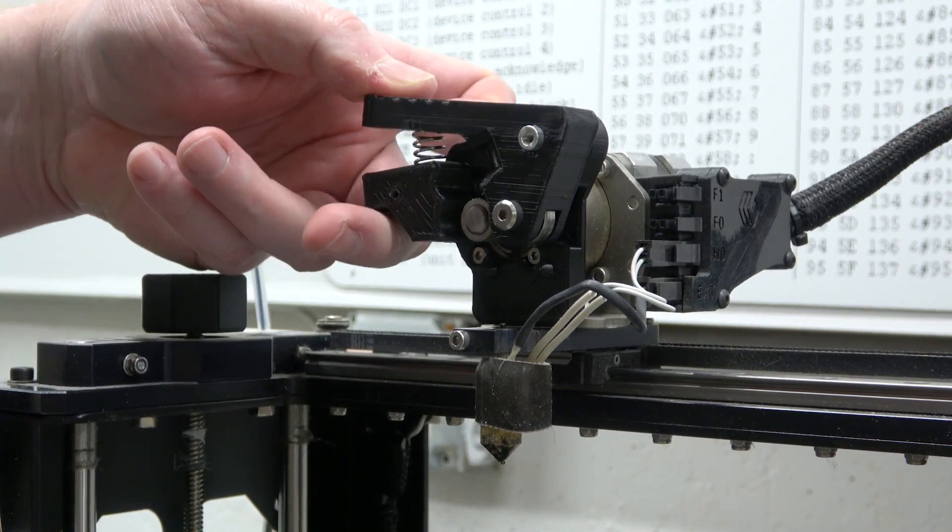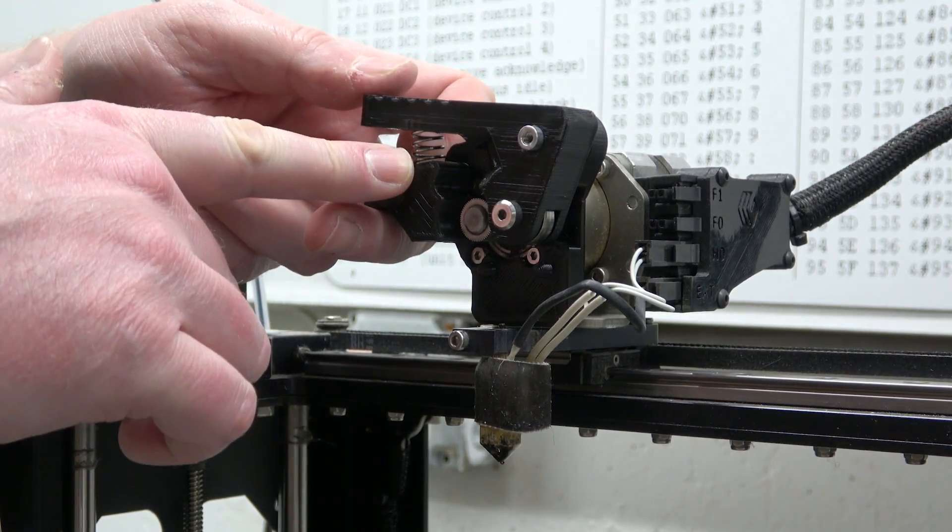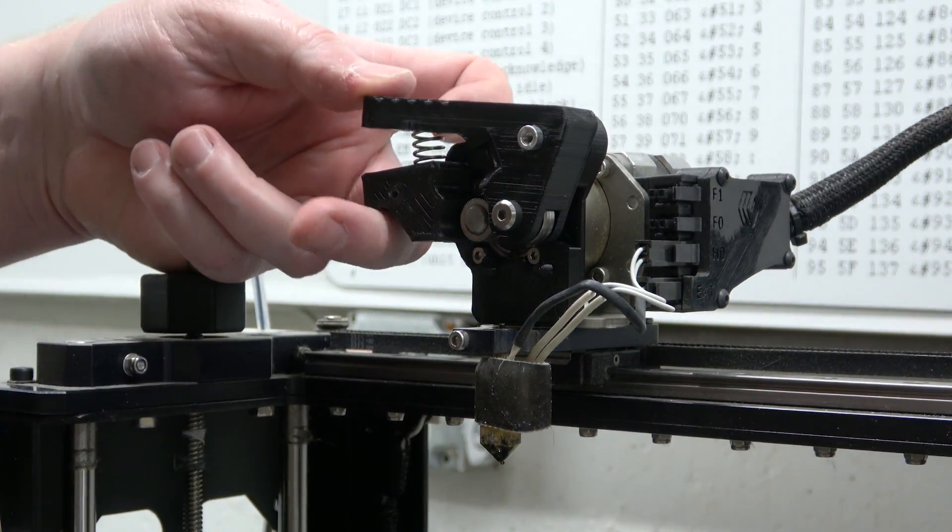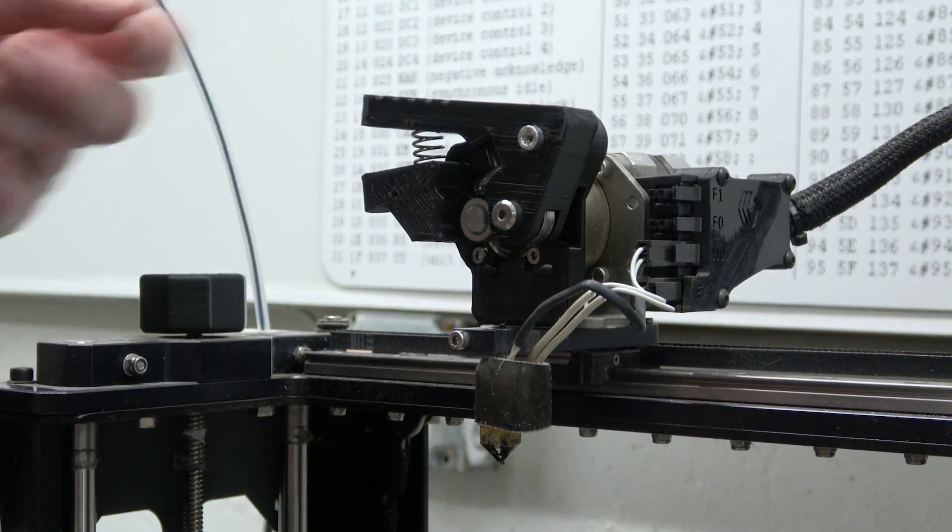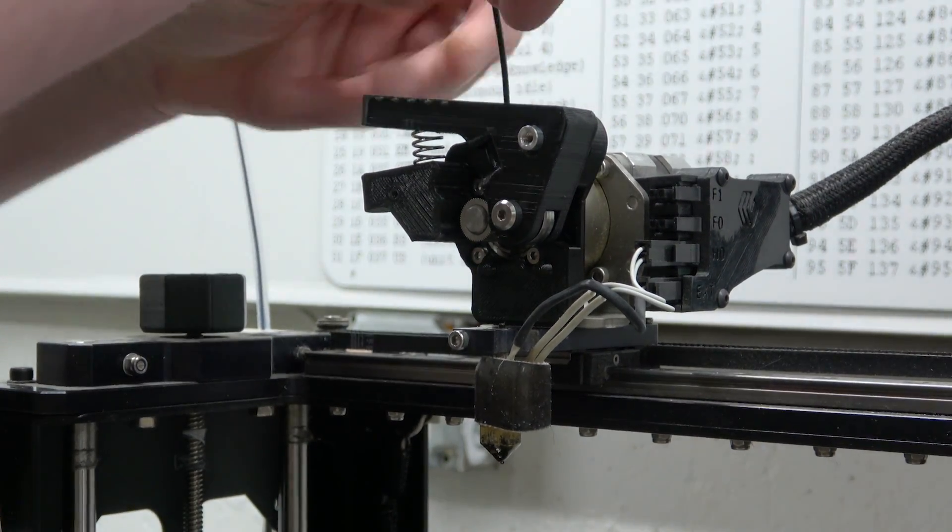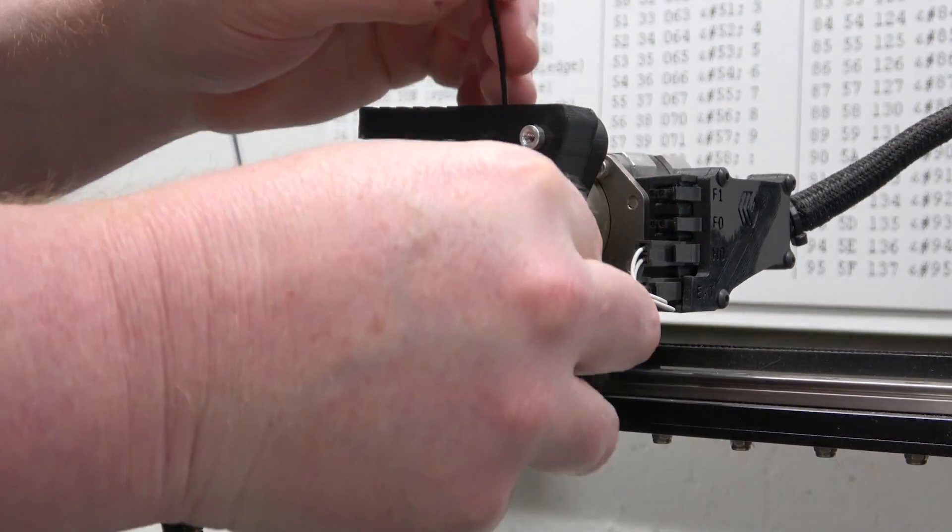All right so spring fits in there pretty good. Spring is 5/8 inch by 1 inch. It doesn't need to be a super strong spring so we've already got a lever action going on here. Let's try it out. Put the filament in. Cool.